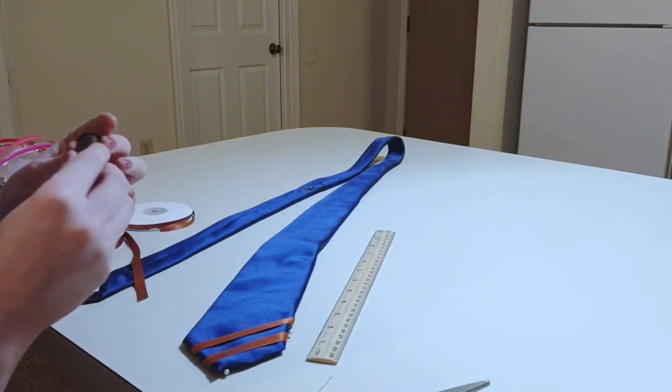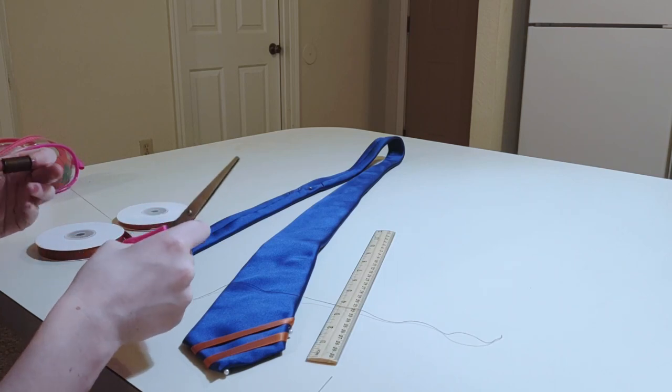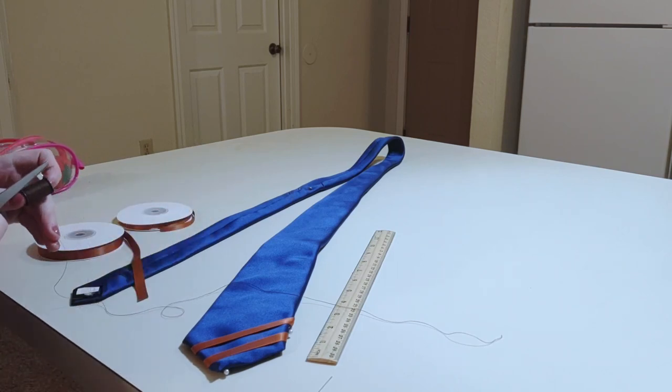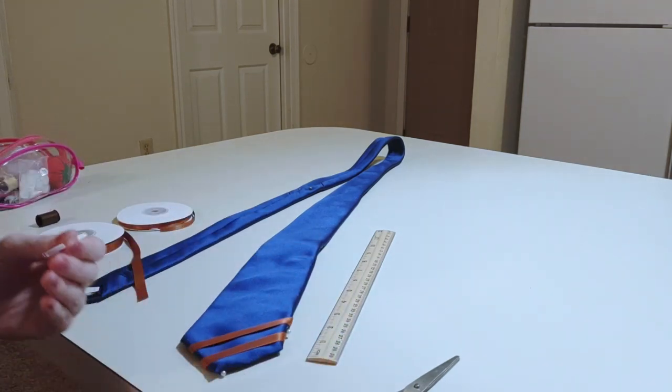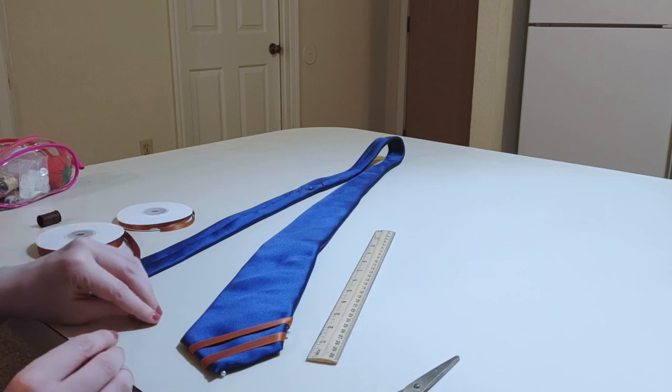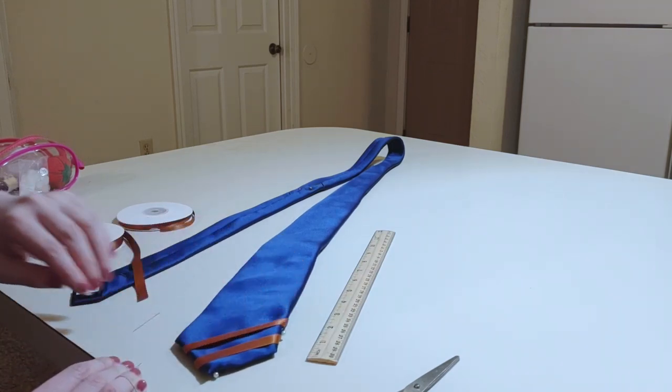I have that pinned in place now kind of where I want it and I'm going to take some brown thread. I don't have a bronze thread unfortunately but this will do I think. When I told my mother about this she was like well why don't you just use glue, but I think that glue would not work very well because I think it would bleed through the ribbon leaving stains on it.